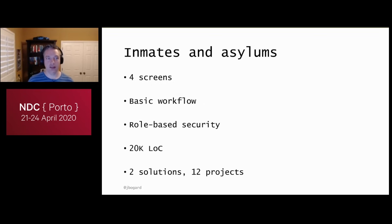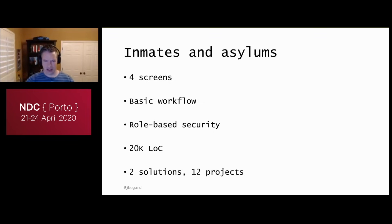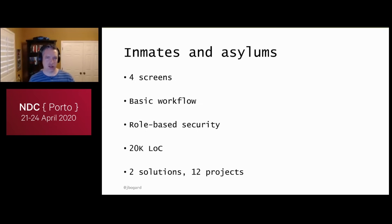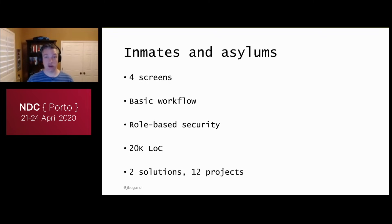In those 20,000 lines of code, they had two separate solutions and 12 individual projects to build out four screens — all supposedly industry-standard best practices for enterprise applications. When I'm presented with new systems like this with multiple solutions and projects, what I like to do is take a request in the application — someone clicking a button — and trace that request all the way from the front end to the back end and back again, to see what needs to be touched to follow the business logic or make a change.